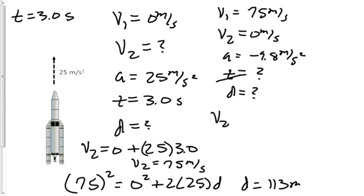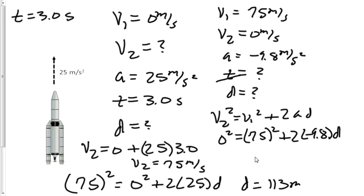V2 squared equals V1 squared plus 2AD. This time, 0 squared is equal to 75 squared plus 2 times negative 9.8 times D. And this time, displacement comes out to be 287 meters.